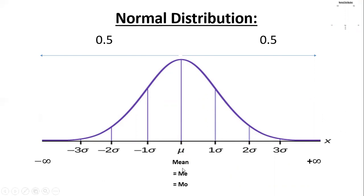The characteristics of the normal curve: mean, median, and mode are equal and coincide at the point x = μ, and the total probability equals 1.